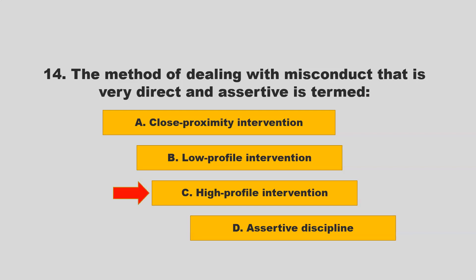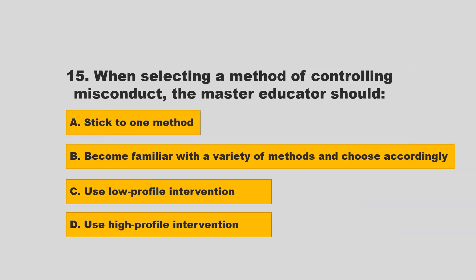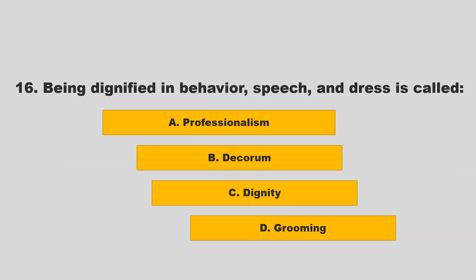The method of dealing with misconduct that is very direct and assertive is termed high profile intervention. If you chose C, high profile intervention, you are correct. When selecting a method of controlling misconduct, the master educator should become familiar with a variety of methods and choose accordingly. If you chose B, you are correct.